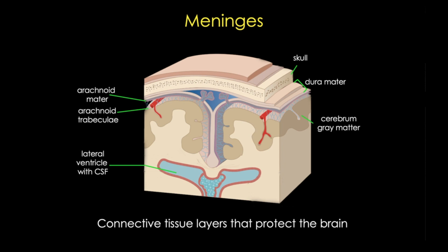Finally, the pia mater is a loose connective tissue that faces the arachnoid and contains a lot of blood vessels and nerves. More importantly, it covers the surface of the CNS and is lined by a membrane made up in part of astrocytes.